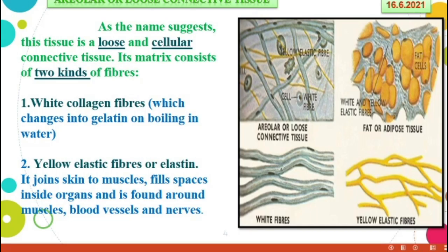Second one: yellow elastic fibers or elastin. It joins skin to muscles. It is elastic in nature, joins skin to muscles, and fills spaces inside organs. It is found around muscles and blood vessels. These yellow elastic fibers occupy the space of fat cells.